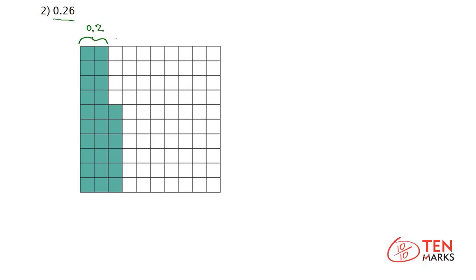3 tenths would be if this entire third row was filled in, but you can see that the third tenth is not all filled in, so we will count the hundredths. 1, 2, 3, 4, 5, 6.